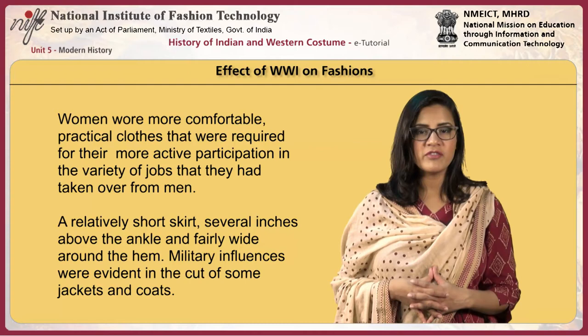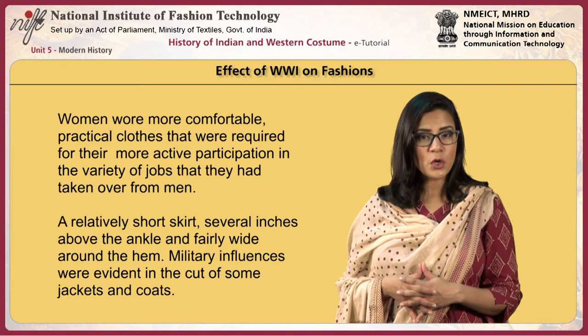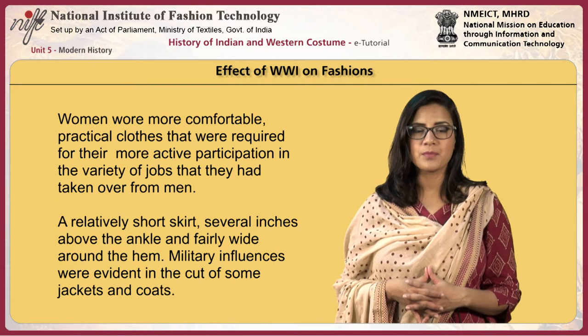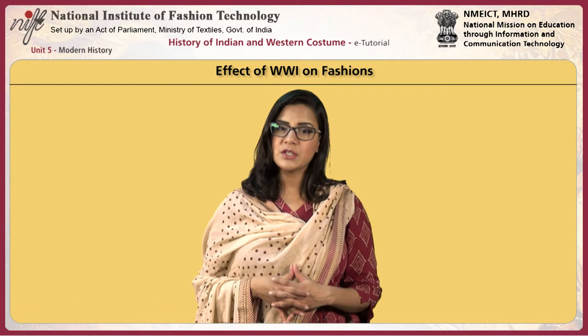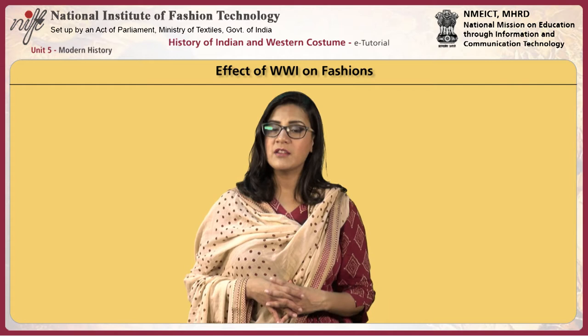During this period, women wore more comfortable, practical clothes required for their more active participation in a variety of jobs they had taken over from men. A relatively short skirt drew several inches above the ankle and was fairly wide around the hem. Military influences were evident in the cut of some jackets and coats. Some clothes worn by soldiers passed into general use — a sleeveless vest-like garment popular among soldiers was later sold at army surplus stores, and manufacturers added sleeves and a zip at the front to make the first sports outdoor jacket.